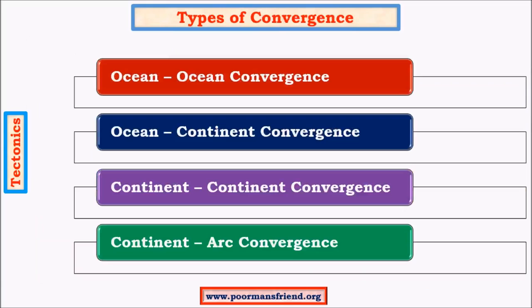The first type is ocean-ocean convergence. The best example is the formation of the Japanese islands, the Philippine archipelago, and the Indonesian islands — which is the question asked in previous mains. The second is ocean-continent convergence, the best example being the formation of the Rockies and the Andes. The third is continent-continent convergence, with the best examples being the Ural mountains and the Himalayan mountains. The fourth is continent-arc convergence, a very rare type, which is an example for the formation of New Guinea islands, north of Australia.